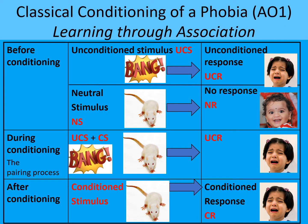You need to use the correct terminology to show learning through association. The unconditioned stimulus was the bang, and that caused an unconditioned response of fear. The neutral stimulus was the rat, which caused no response from Little Albert. During the conditioning process, you pair the unconditioned stimulus — the bang — with the neutral stimulus — the rat — which now becomes the conditioned stimulus. You still get an unconditioned response because the loud bang is still there, and then eventually the conditioned stimulus will cause a conditioned response of fear. That's how the phobia is initiated.